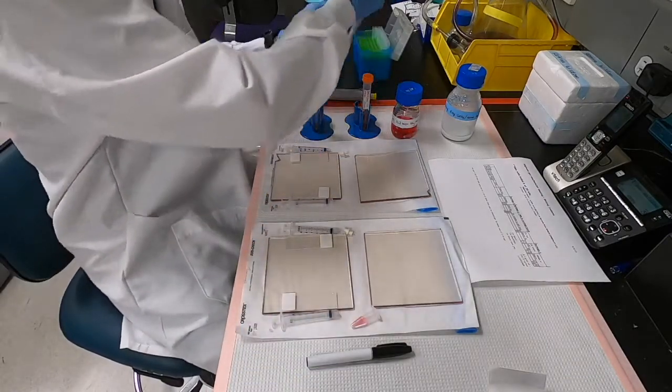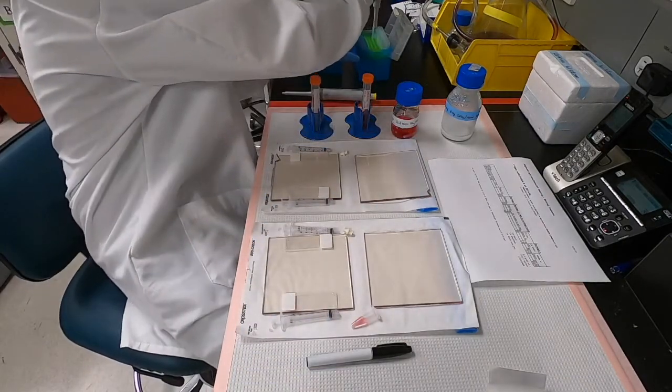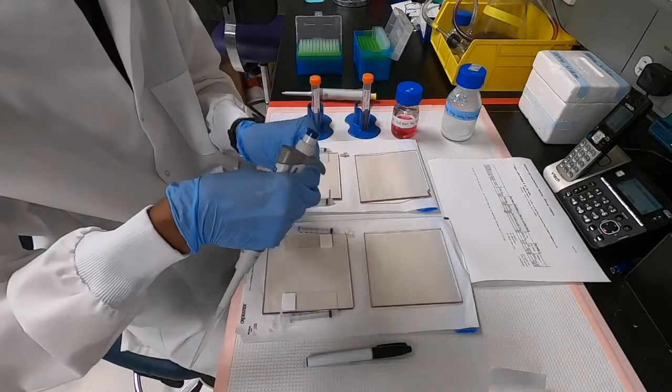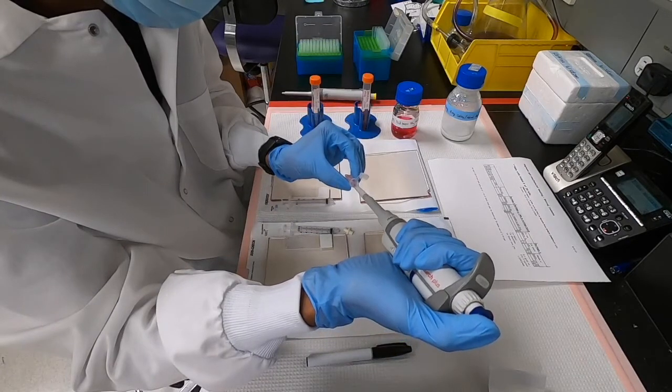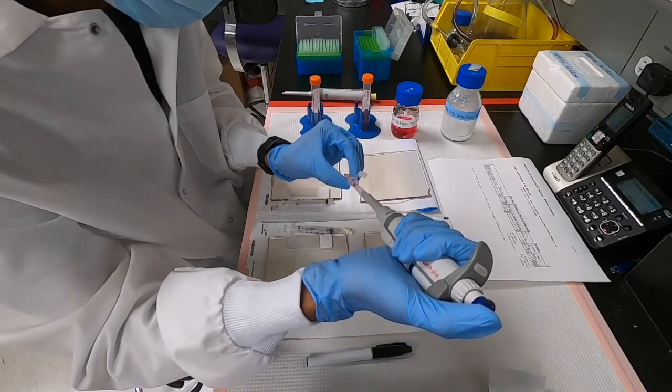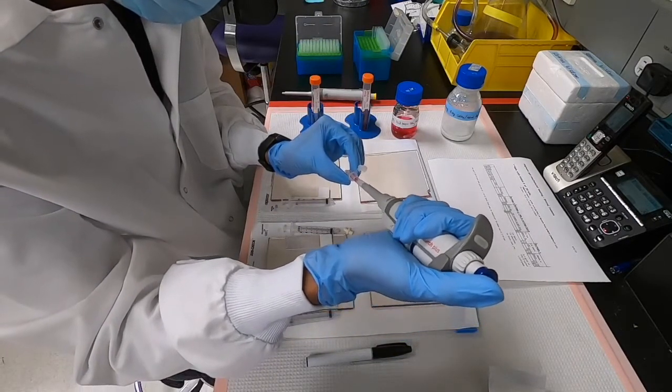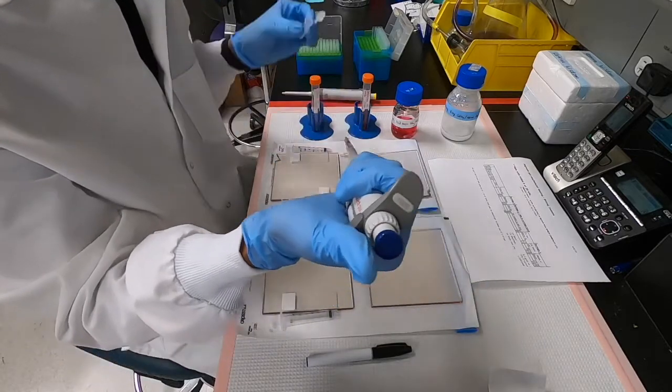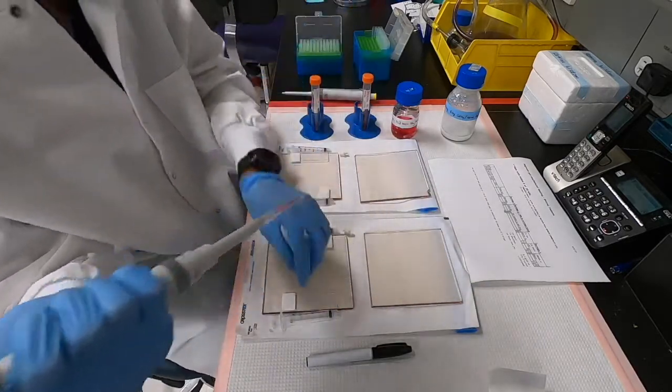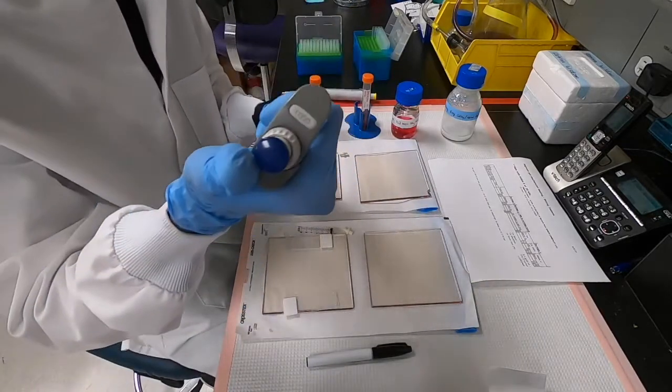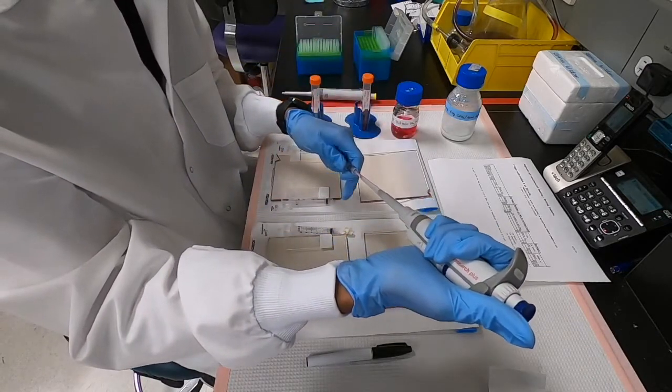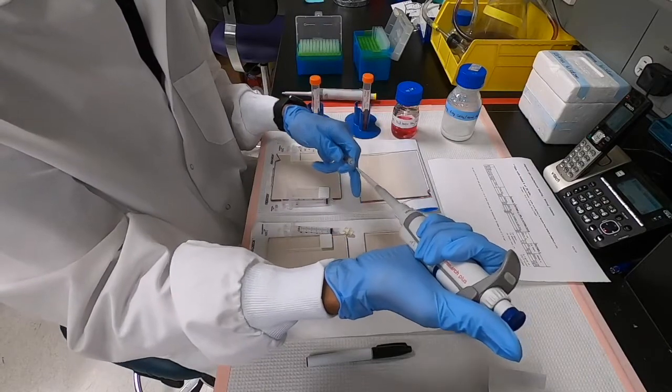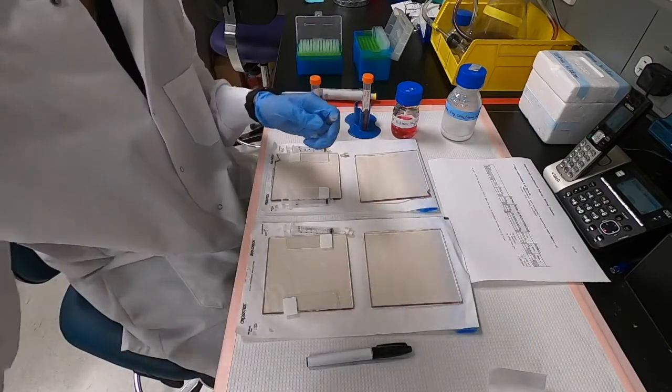We start off with 600 microliters of alginate in syringe 1. Let's draw the alginate in using a pipette and make sure to avoid getting any air bubbles. Now let's transfer the alginate to the syringe. The way we do this is that we use the syringe to draw the alginate in, not the pipette.